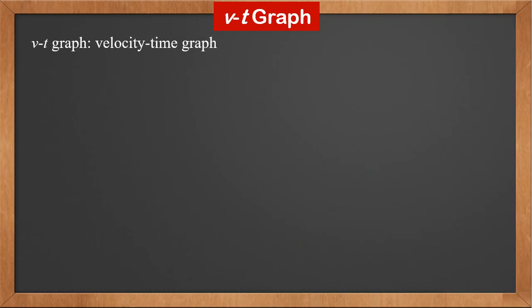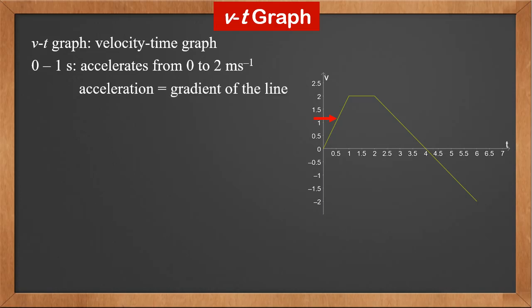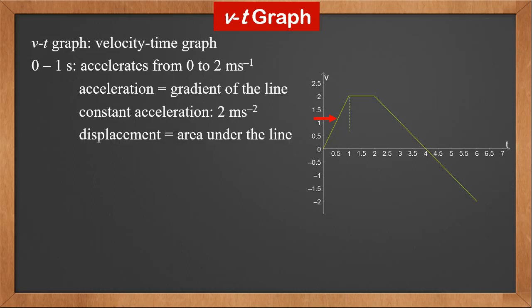The second kind of graph is the VT graph, or velocity-time graph. Here's an example — its shape is the same as the ST graph we saw, but its meaning is different. From 0 to 1 second, the object accelerates from 0 to 2 meters per second. Since it's a straight line, the acceleration is constant and is the gradient of the line, which is 2 meters per second squared. The displacement is the area under the line — it is a triangle, and the area is 1 times 2 over 2, which is 1 meter.